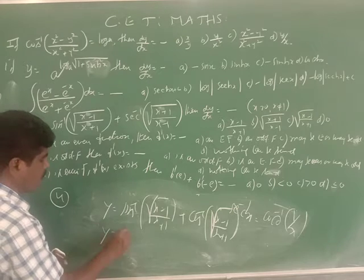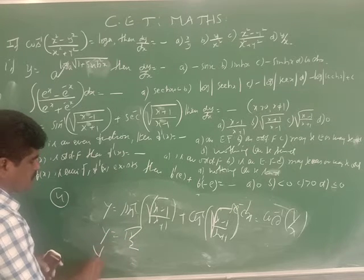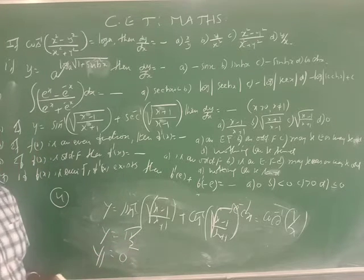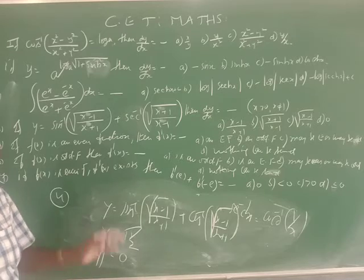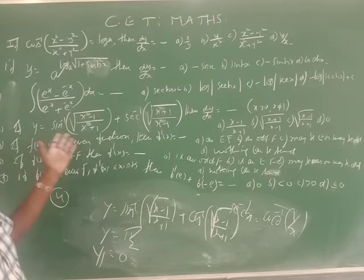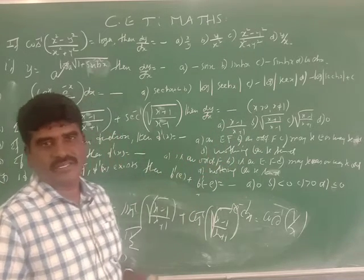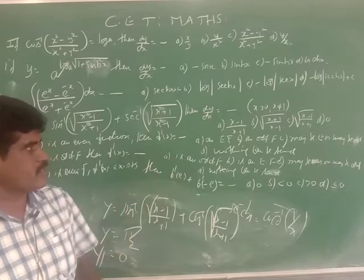So y = π/2. Differentiating with respect to x: dy/dx = derivative of π/2, which is a constant. The derivative of every constant is 0. Option D is the answer: 0.